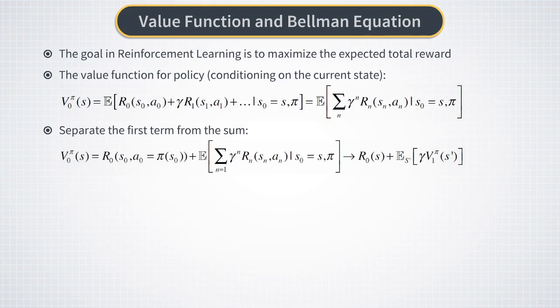We replace the expectation of the sum with the sum of expectations. Now the first term is just the reward from the current step, but the second term is the expectation of the same value function at the next time moment when it will have some other state s prime as its argument, multiplied by the discount factor gamma.